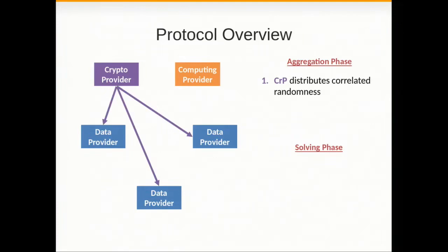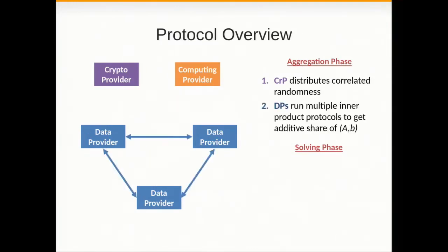So this goes as follows. The crypto provider distributes some correlated randomness exactly along the lines of what you were explaining. And then the data providers engage in a bunch of inner product protocols to construct an additive share of the system that has to be solved. And then in a solving phase, the system of equations is solved by the crypto provider and the computing provider using a garbled circuits protocol.